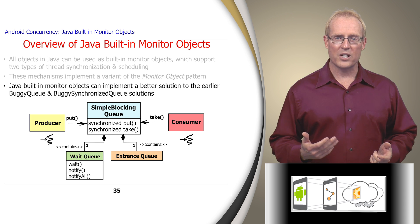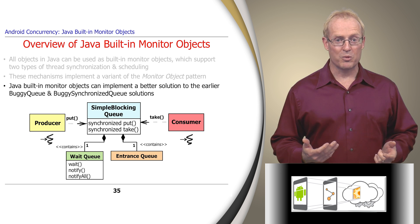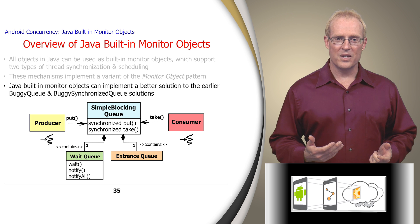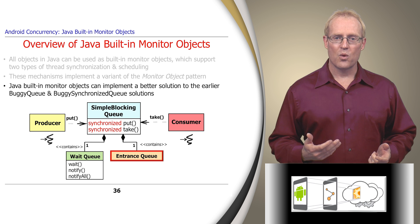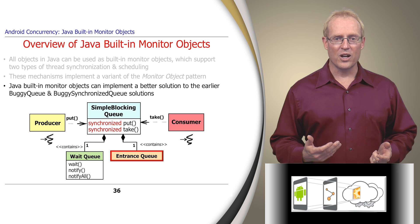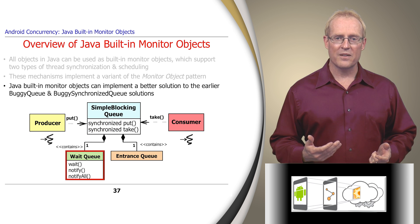We'll apply Java's built-in monitor objects to implement a better solution called Simple Blocking Queue. This improves upon buggy queue by preventing race conditions when put and take methods are called concurrently by multiple threads. It also improves upon buggy synchronized queue by preventing busy waiting from wasting CPU cycles.